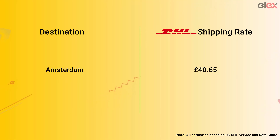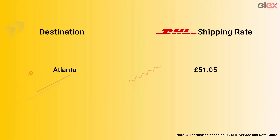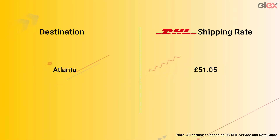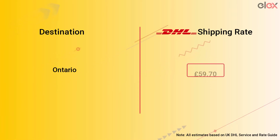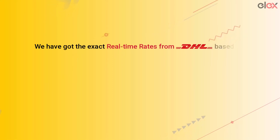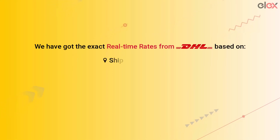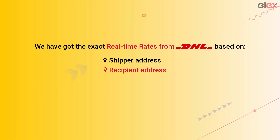First, the shipping address is kept as Atlanta, Georgia — the rates fetch up pretty good. Next, it is changed to Ontario, Canada. There you go — we have got the exact real-time rates from DHL based on shipper address, recipient address, and the product dimensions and weight.